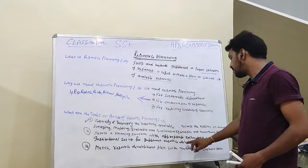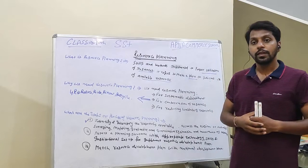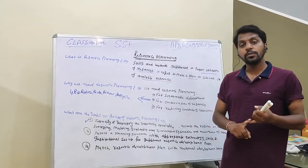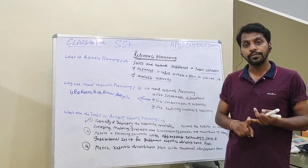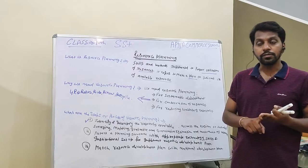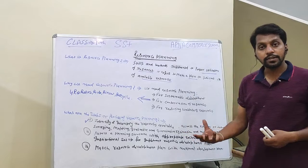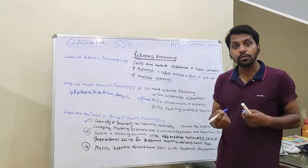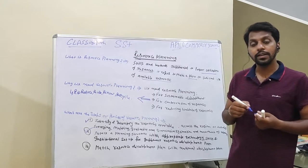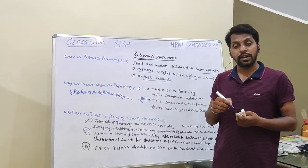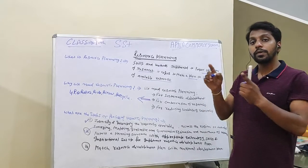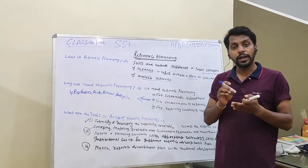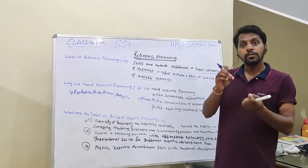The second step of resource planning is to prepare a planning structure with appropriate technology, skills, and institutional set-up for immediate resource development planning. We need to use ethical technology, ethical skills, and an institutional set-up which will execute and implement the resource development plan.